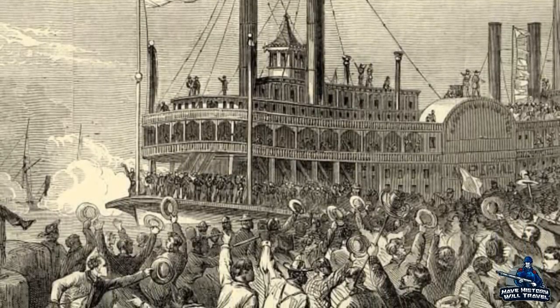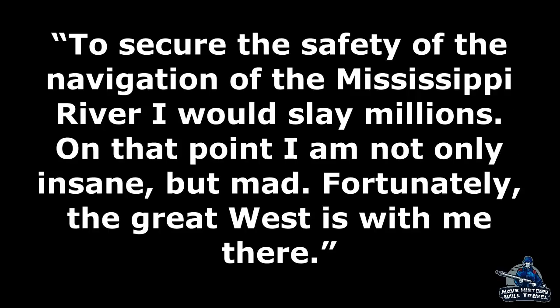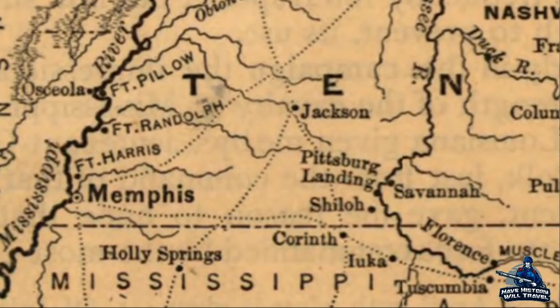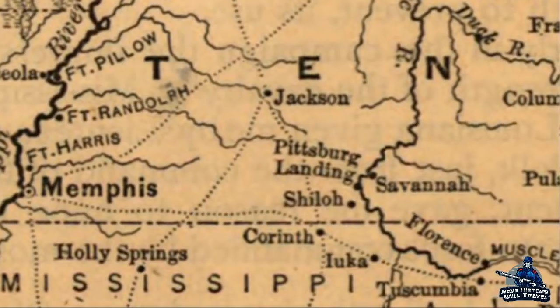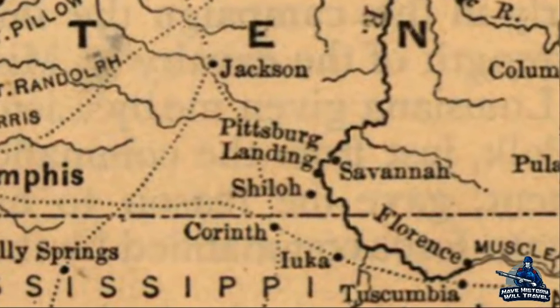Confederate General Braxton Bragg commented that the river was of more importance to us than all the country together. And Union General William Tecumseh Sherman stated, 'To secure the safety of the navigation of the Mississippi River, I would slay millions. On that point, I am not only insane, but mad. Fortunately, the Great West is with me there.' The staging ground was set for the Confederacy and the Union to fight for the vital river that was termed the Father of Rivers.